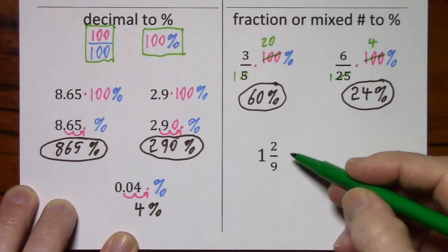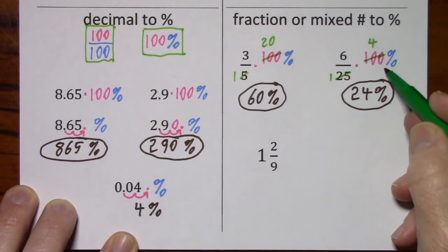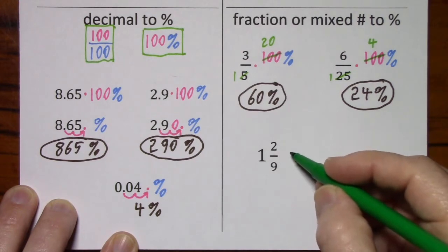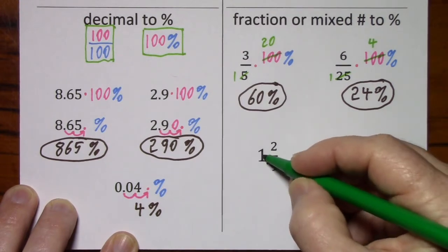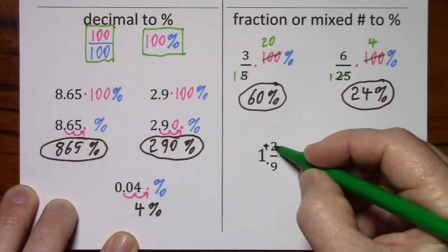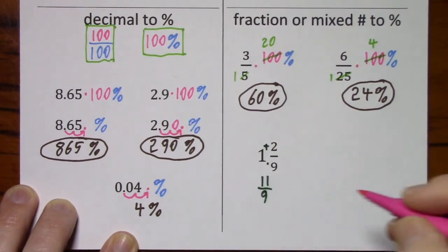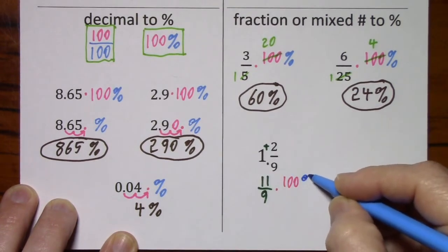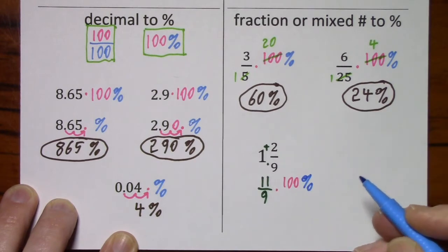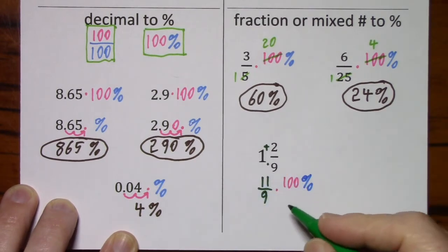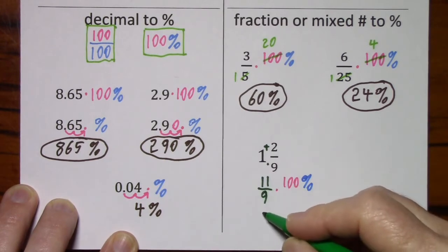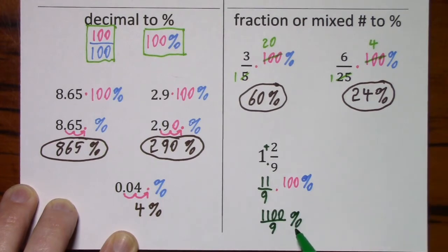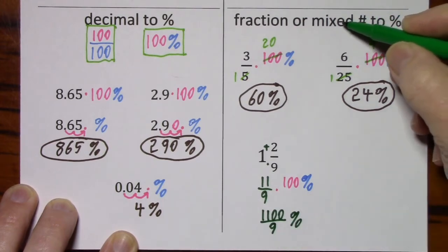With a mixed number, you don't want to just put in times 100% like we did here and here. You can't multiply or divide by a mixed number. So this is 9, 10, 11 ninths. And now I'll say times 100%. Nothing's going to reduce. So this gives me 1100 ninths percent. I can't leave it in this form.